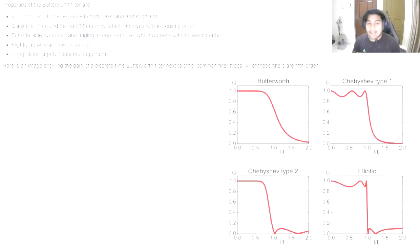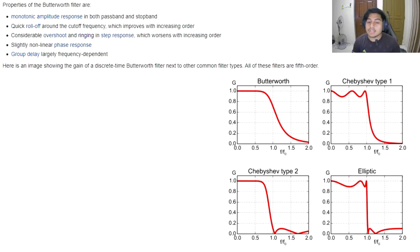we are going to implement an IIR Butterworth filter. The reason that we choose IIR Butterworth filter is because of its monotonic amplitude response, which is present in both passband and stopband. Also, quick roll-off around the cutoff frequency, which improves with increasing order.